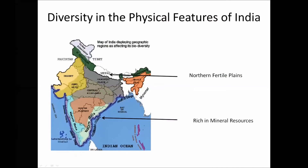We will continue with the diversity in the physical features of India. Every region has its own distinct characteristics and yet all regions are interconnected with each other. All of them have an important contribution in the progress of the nation. For example, the Northern Fertile Plains are also called the Stored House of Grains, and the Southern Plateau is rich in many resources.